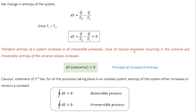Since all natural processes occurring in the universe are irreversible, we can say the entropy of the universe always increases — DS universe is always greater than zero. This is known as the principle of increase of entropy. To summarize: for a reversible process, the total change in entropy is zero; for an irreversible process, the net change in entropy is greater than zero. Using this understanding, Clausius redefined the second law from the perspective of entropy, stating that for all processes taking place in an isolated system, the entropy of the system either increases or remains constant.